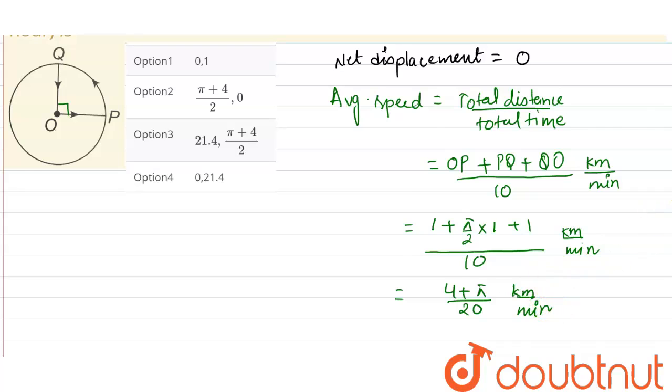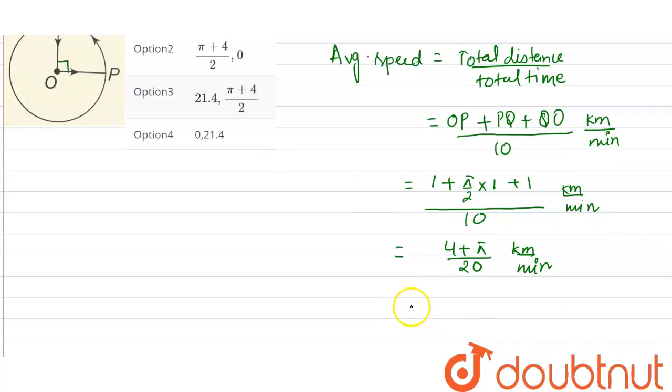Okay, now changing the unit from kilometer per minute to kilometer per hour, so multiply with 60. So (4 + π) / 20 × 60 will be kilometer per hour.